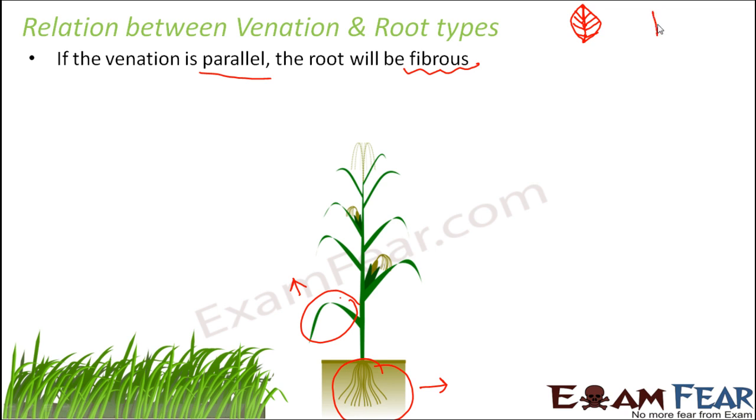You can remember it this way: PF — that is, parallel venation gives fibrous roots. PF is easy to remember.